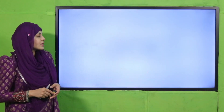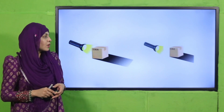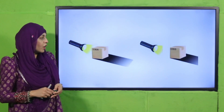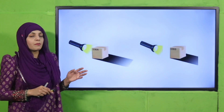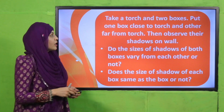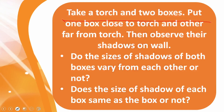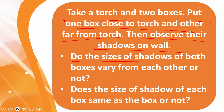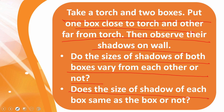Now it is time for an activity. Here you can see three boxes with a torch — look at them carefully, they are blocking the light of the flashlight. Take a torch and two boxes: put one box close to the torch and one far from the torch, then observe their shadows on the wall. Do the sizes of the shadows of both boxes vary from each other?